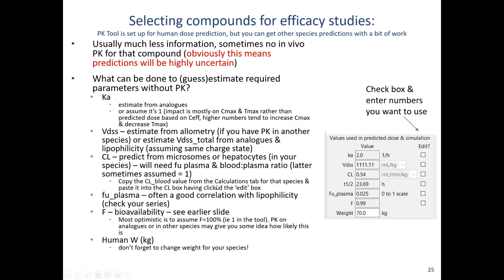One thing to note for clearance: normally you'd use the in vitro clearance for human, but here you're going to use the in vitro clearance for the animal species. You would look at the animal species tab, copy the total clearance value, and paste it into this field once you've clicked Edit.